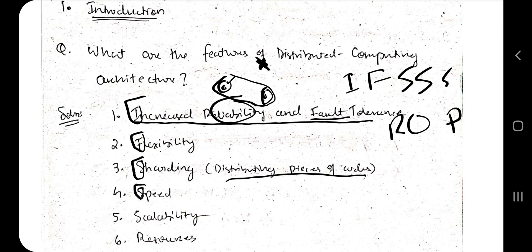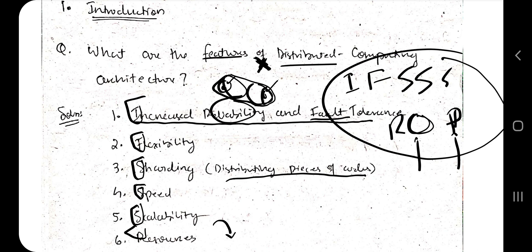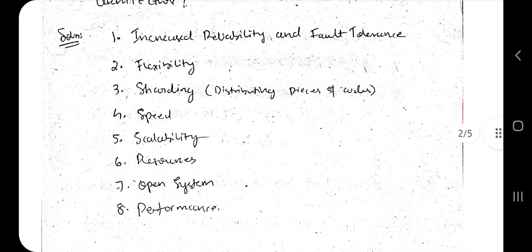Speed — because different parts of the system have the same code, you can retrieve it very fast. Scalability — because it is distributed, it can be accessed from many different places. R is resources — there are a lot of resources involved, and that is one of the features. O means open system — accessible to everyone, like open source. And P means performance — it is good in performance since things are happening in parallel.